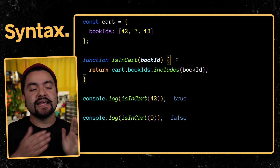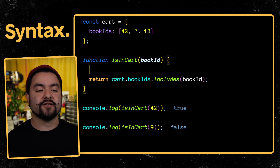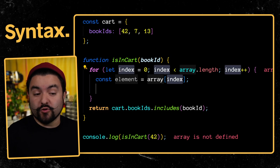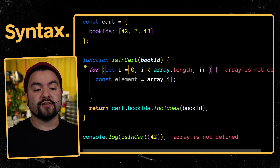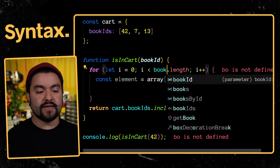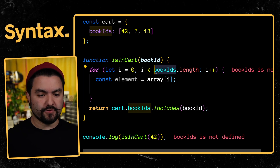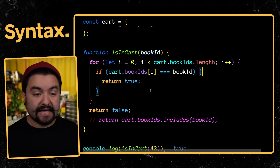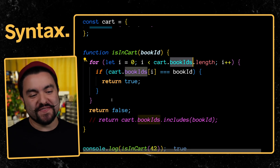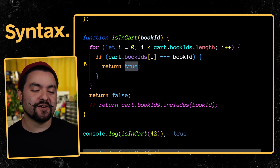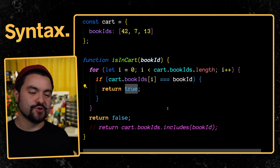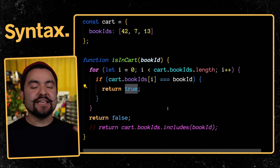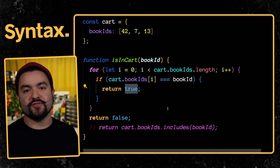Using includes, or similarly filter or find, hides the complexity — it's literally a for loop iterating over the entire array. If we implement it explicitly with a for loop, you can clearly see it has to look at every single value to determine if the item is in the cart. The code works the same way, but when you use includes or filter or find, you have to think about the fact that it's searching the entire array.